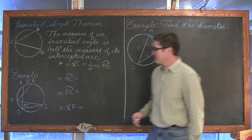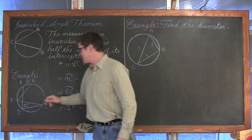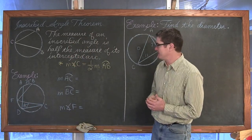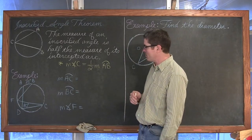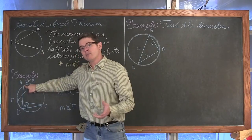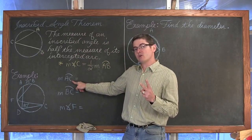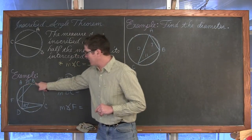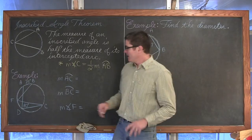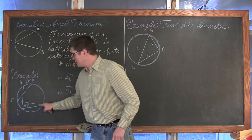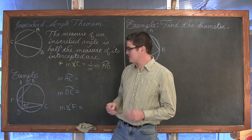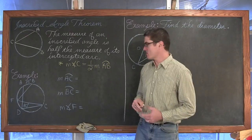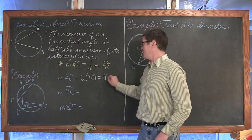Our first example has a couple of inscribed angles: angle BFC and angle ADC. Both angles have their vertex on the circle, so they're inscribed. The first question asks for the measure of arc AC. Arc AC is a minor arc — two letters means minor arc. We have inscribed angle ADC equal to 80 degrees, and since the arc is twice the inscribed angle, the measure of arc AC is 2 times 80, which is 160 degrees.